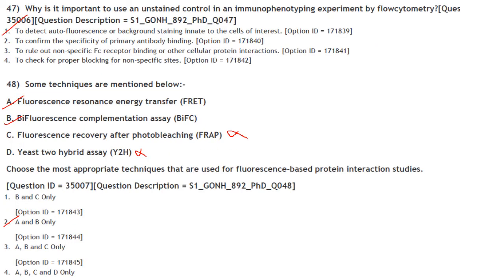Why use an unstained control in immunophenotyping by flow cytometry? It is to detect autofluorescence or background staining innate to the cells of interest. Answer is option 1.